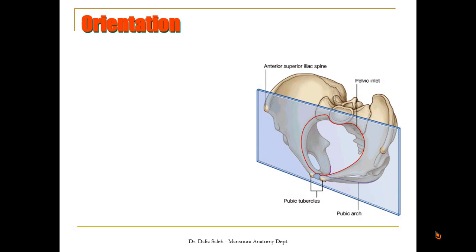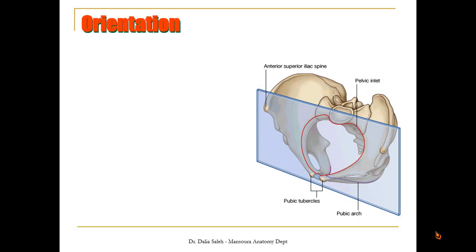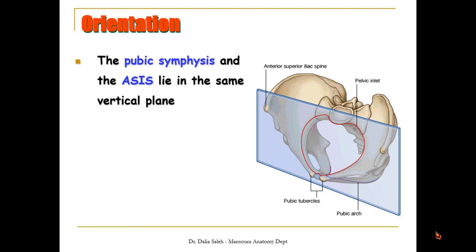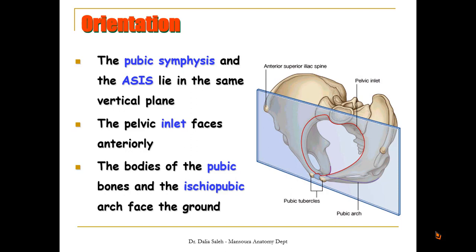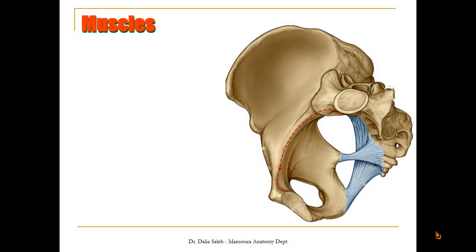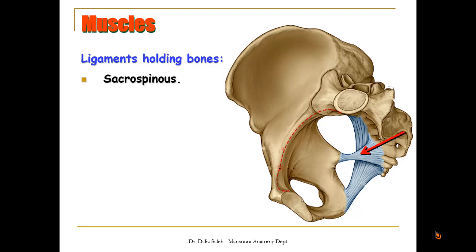In a living person, the pelvis is oriented as follows: the pubic symphysis and the anterior superior iliac spines lie in the same vertical plane. Thus, the pelvic inlet faces anteriorly, while the bodies of the pubic bones and the ischiopubic rami face the ground. On the medial surface of the articulated hip bone with the sacrum, we can see two important ligaments: the sacrospinous ligament and the sacrotuberous ligament.